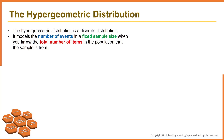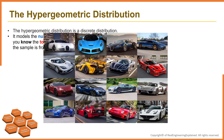The hypergeometric distribution is a discrete distribution. It can be used to model the number of events in a fixed sample size when you know the total number of desired items in the whole population the sample is coming from. Each item in the sample has two possible outcomes — either an event or non-event. For this example, turbo or non-turbo engine car.